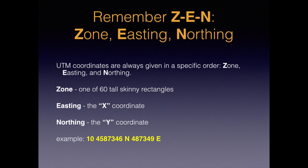UTM coordinates are always given in a specific order: zone, easting, and northing. Remember high school geometry and XY coordinates? UTM works in pretty much the same way. The zone is one of 60 tall skinny rectangles that cover the earth. The X coordinate or horizontal axis is called an easting, and the Y coordinate or vertical axis is called a northing. Here's an example of a complete UTM coordinate.